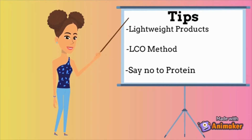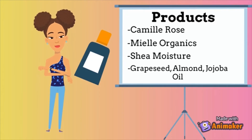Another good tip is to stay away from protein — that means staying away from protein treatments, protein deep conditioners, and protein leave-in conditioners. Now, to be clear: all hair is made up of keratin, which is a protein, so we all still need to include protein in our hair regimen. However, if you have low porosity hair, you're going to need way less protein and a lot more moisture. How often to include protein depends on your individual hair, so you'll have to learn what it needs.